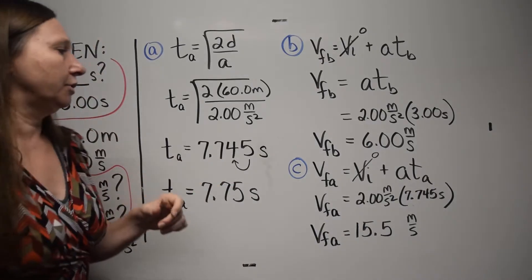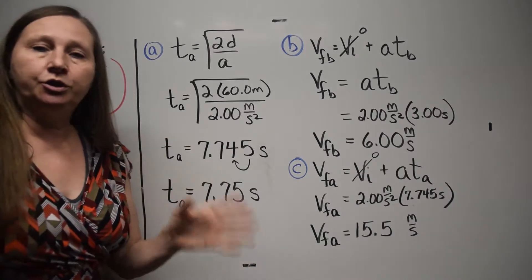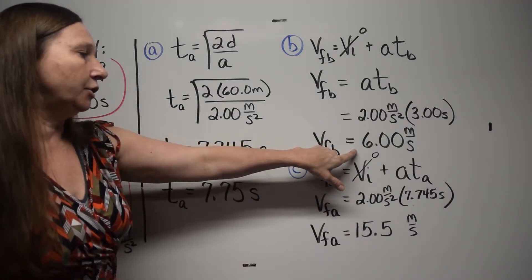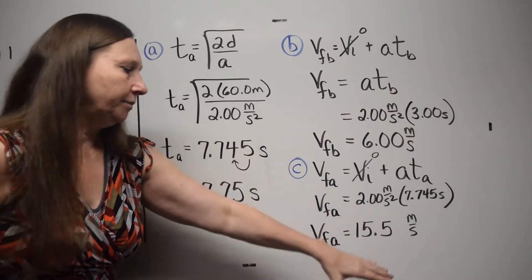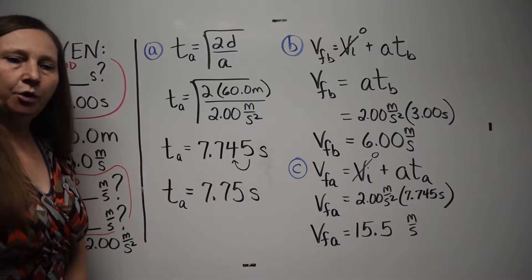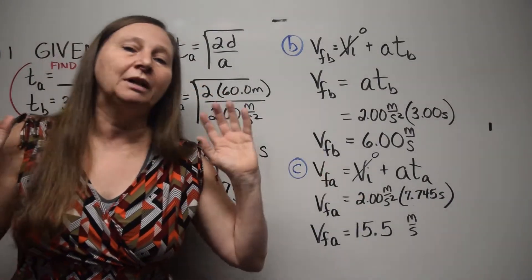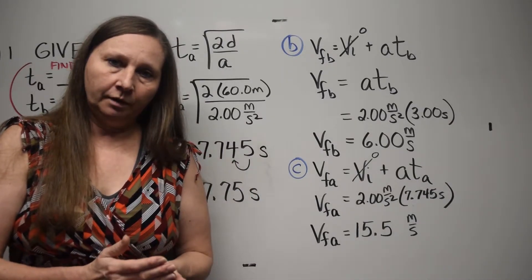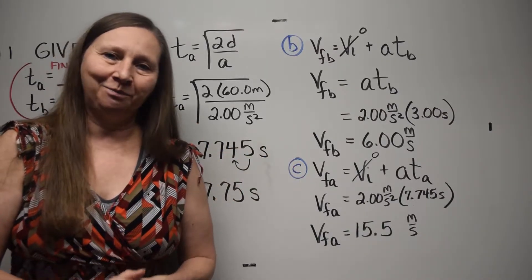Everything makes sense — she's accelerating the whole time from an initial velocity of zero, going faster and faster in the north direction. After 3 seconds her speed is 6 meters per second; after 7.75 seconds her speed is faster. Very simple and straightforward. Go back to the blank problem, try to do it on your own. If you get stuck, go back and watch once more.